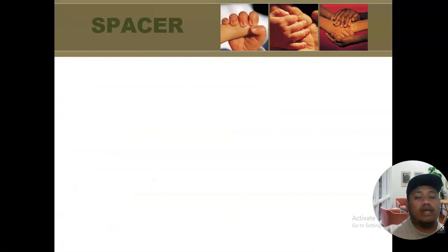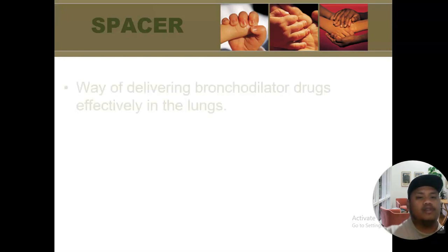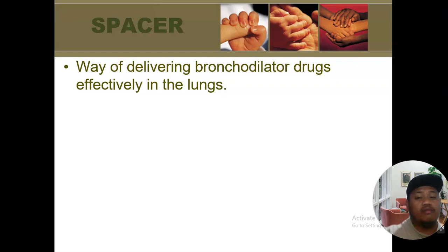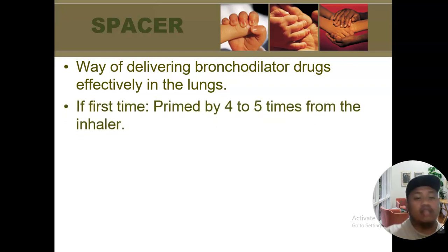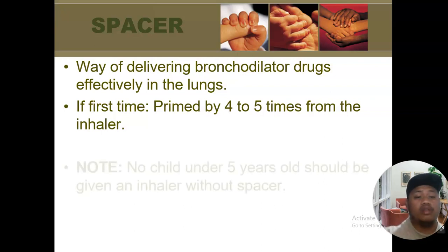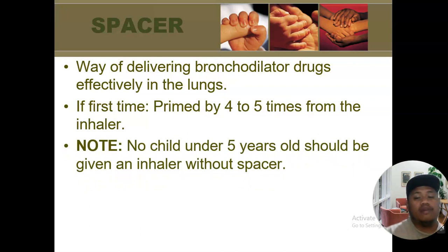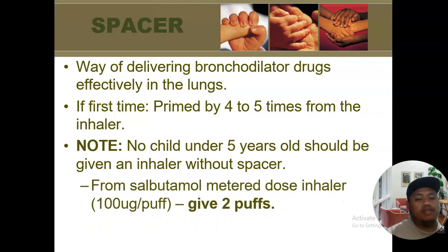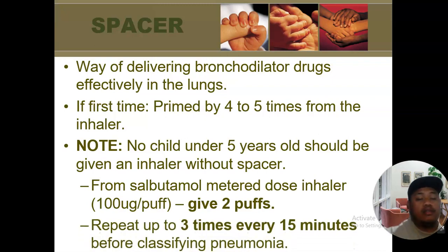For giving the rapid bronchodilator: we do not give bronchodilator to children under five without a spacer. A spacer is a device for delivering bronchodilator drugs effectively into the child's lungs. For the first use, prime it four to five times. No child under five should be given an inhaler without a spacer. The spacer delivers about 100 micrograms per puff — give the child two puffs, and repeat three times every 15 to 20 minutes interval, then reclassify the condition.